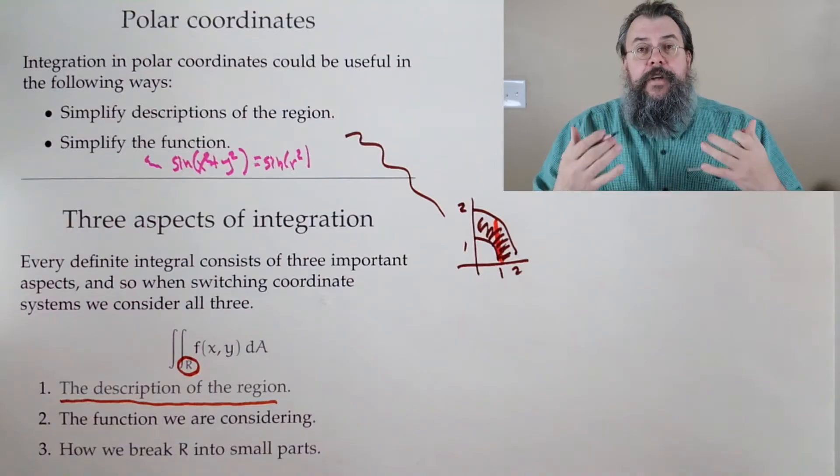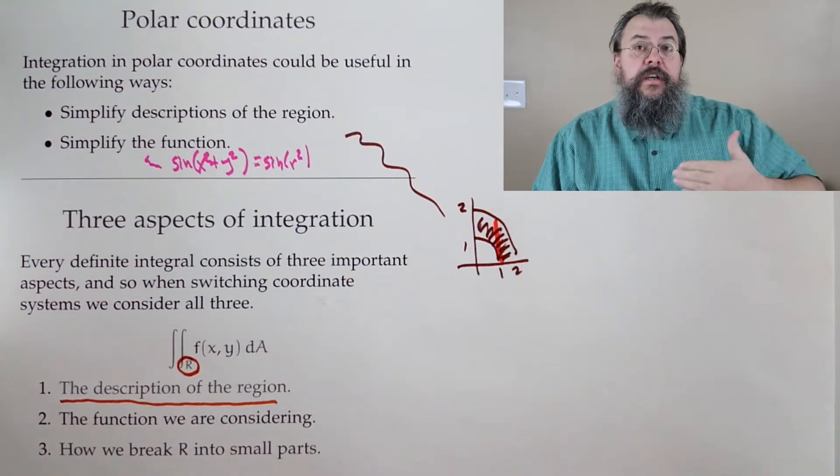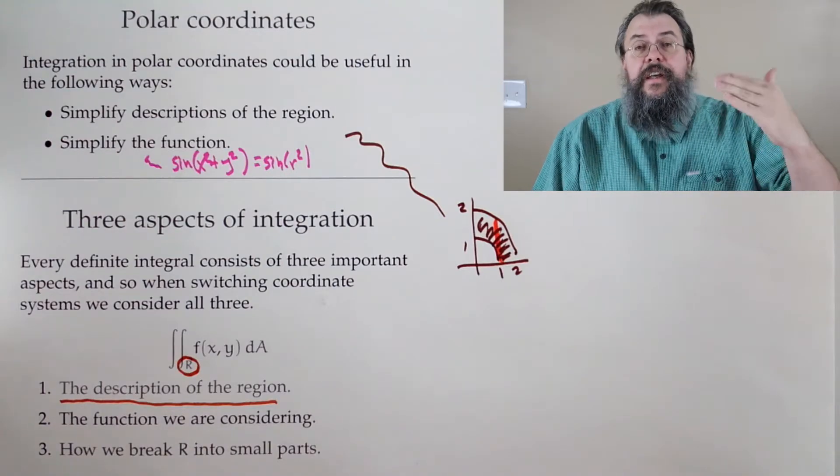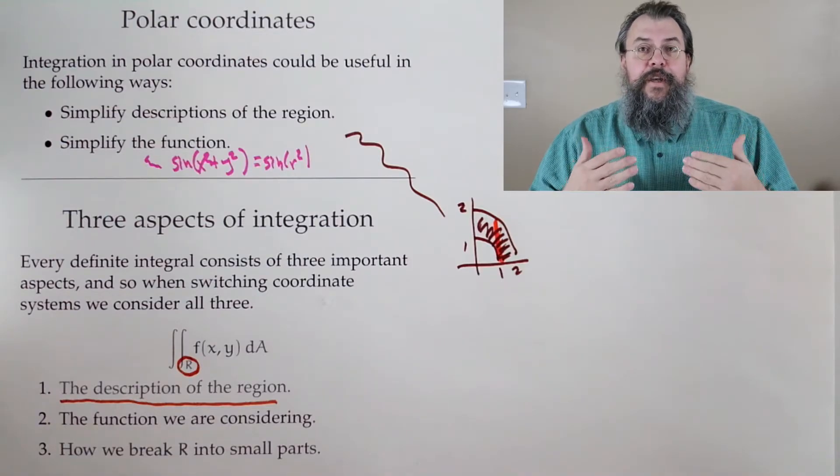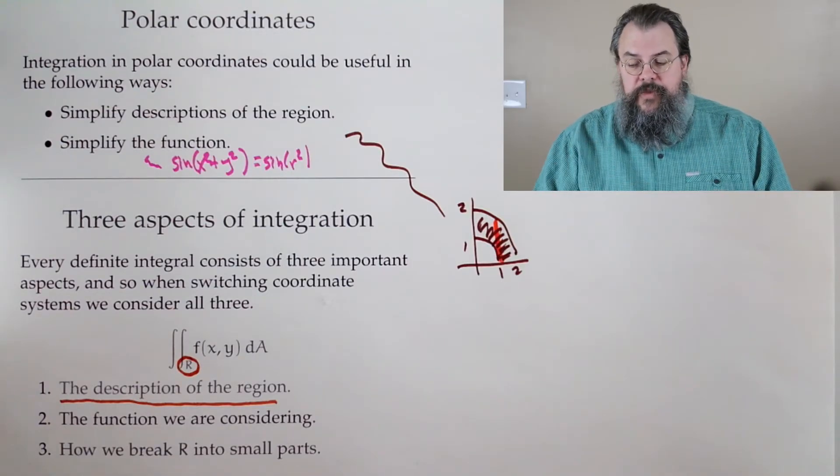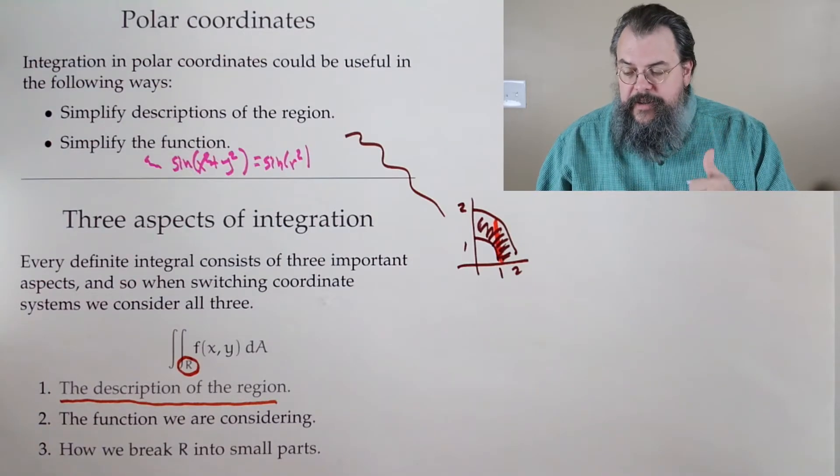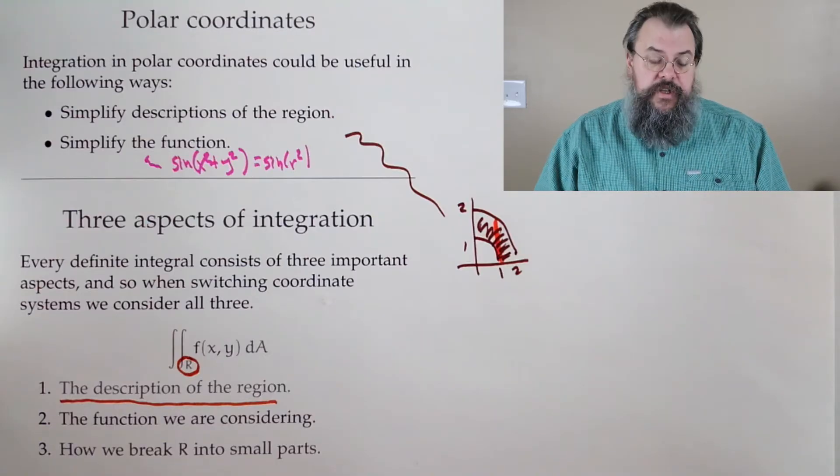So we have to have our region identified. And in particular, we have to have our region described. See, notice it's not just the region. It's the description of the region. So we have to describe it in terms of our coordinate system that's currently in play. So that's the first thing that every integral has to have. It has to have a description of the region you're integrating over.